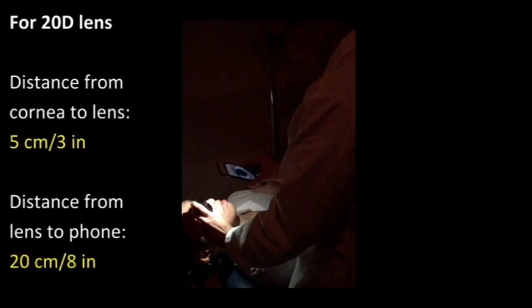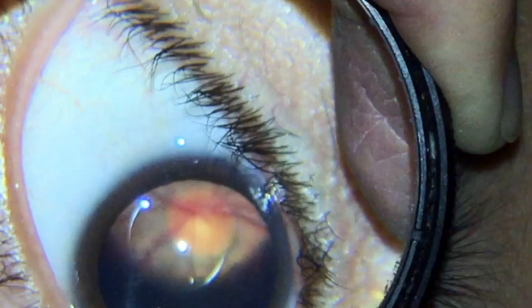For a 20-diopter, hold the lens about 5 cm away from the patient's cornea. The smartphone should be about 20 cm away from the lens — this is the starting position. Keep the smartphone and lens fixed with respect to each other in the XY plane along an imaginary axis, then move the lens and camera system away from the patient until you have a clear aerial image of the retina.